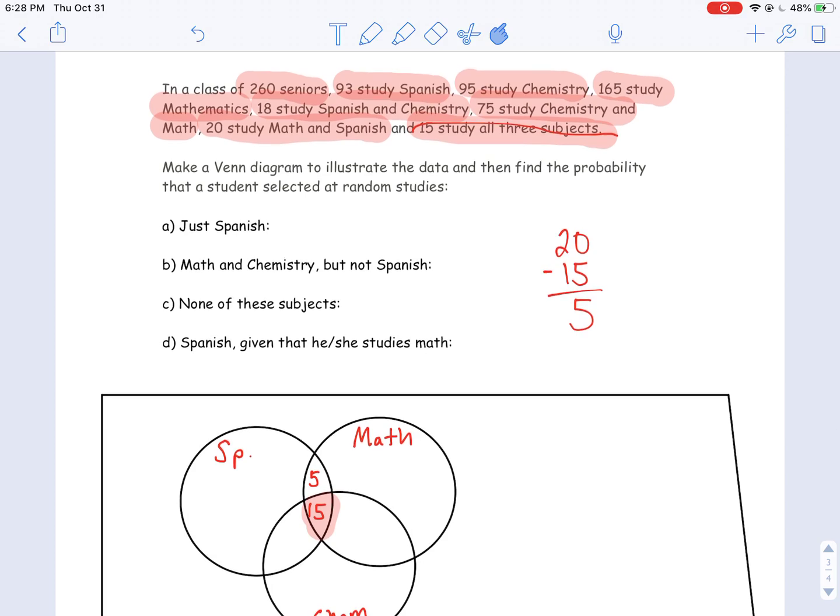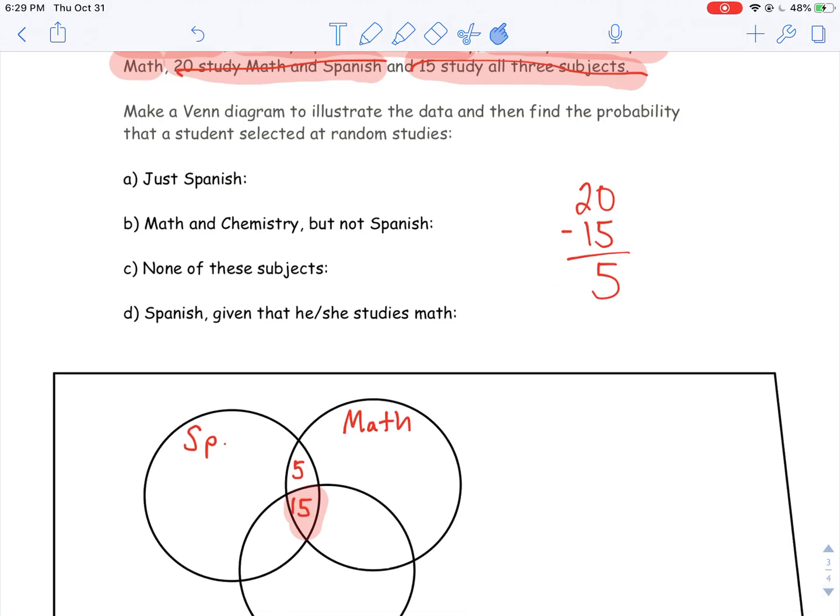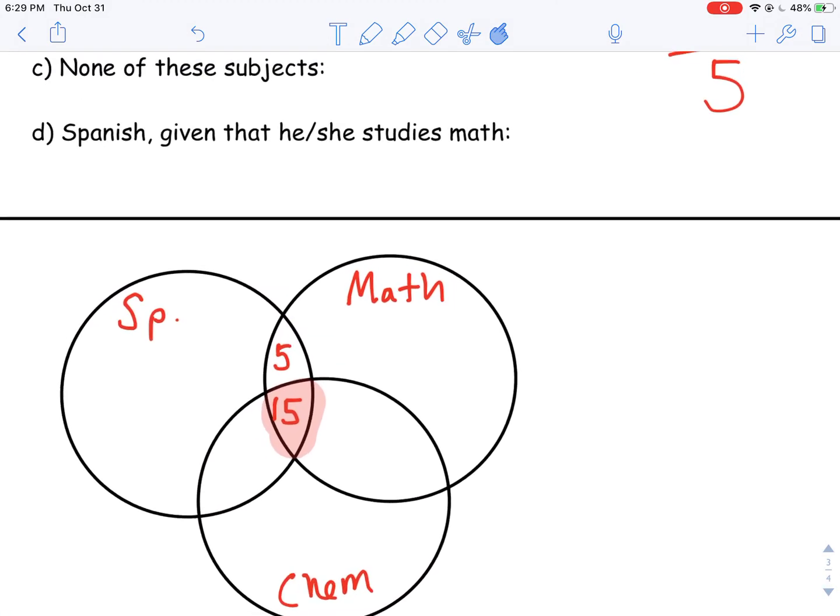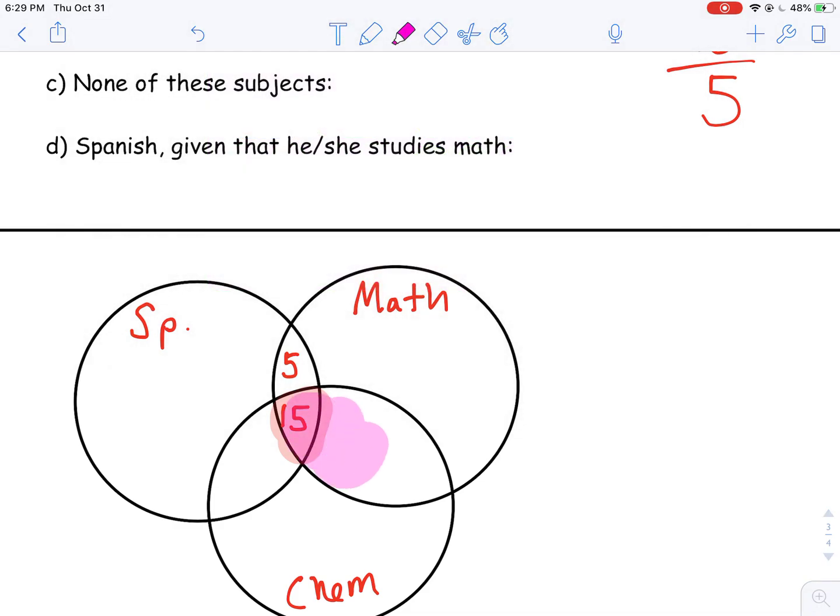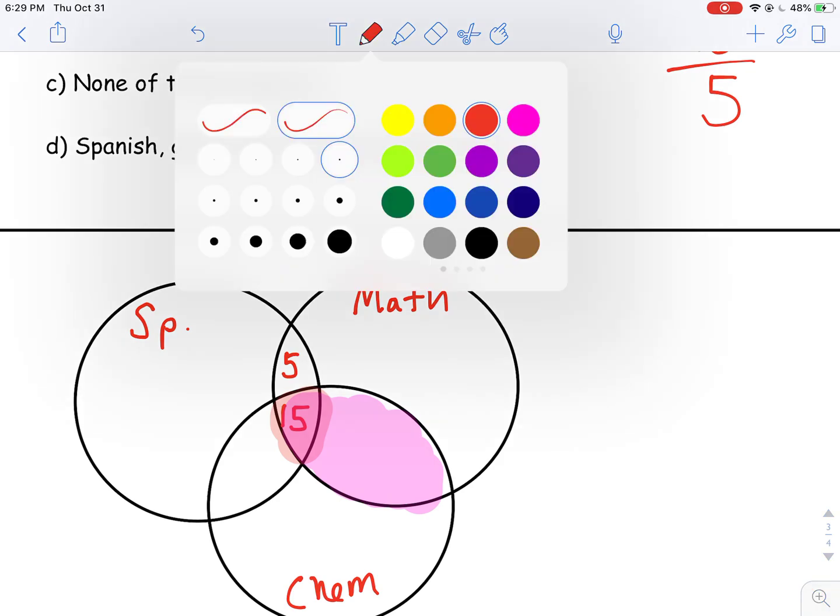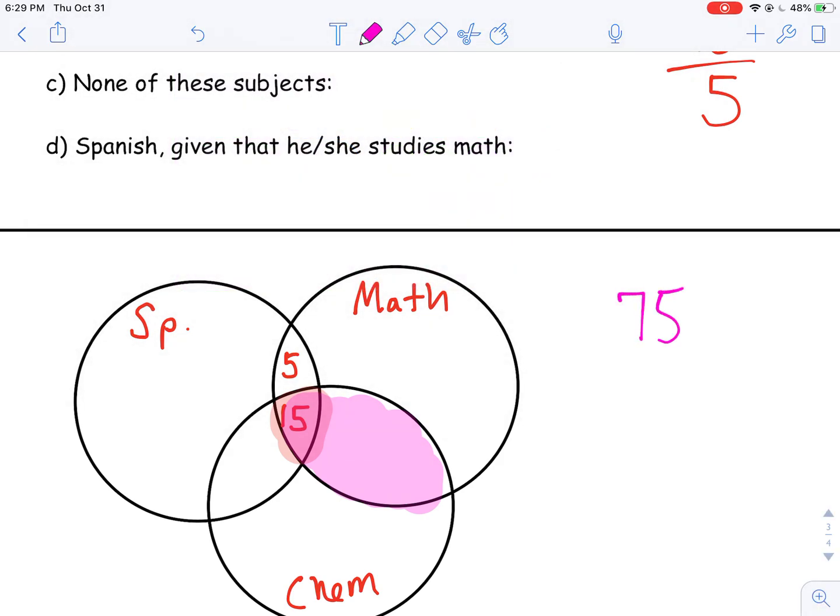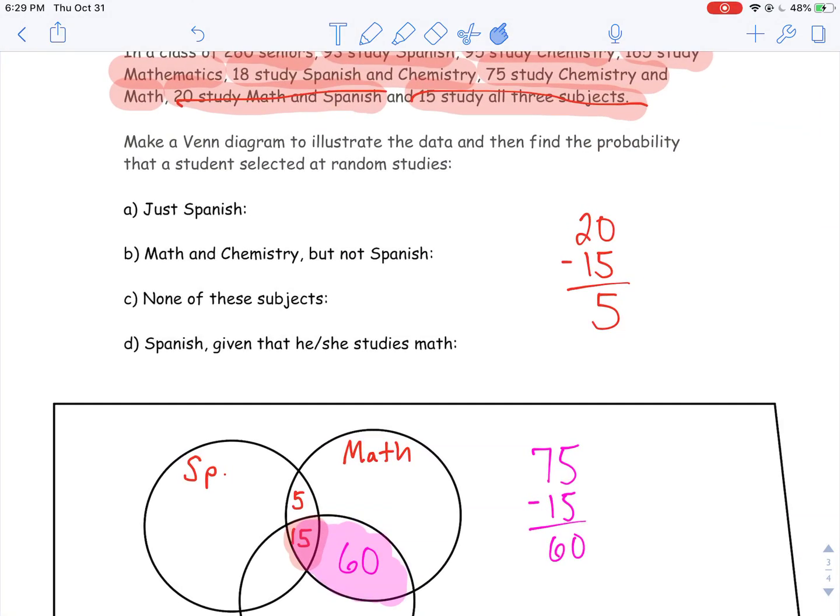75 study Chemistry and Math. So we're going to look for Chemistry and Math. The intersection of Chemistry and Math is going to be right here. But they tell me 75. That 75 includes these 15 who are taking all three of them. So I'm going to subtract that 15, and that gives me 60. I'm plugging 60 right here. I've got another one off the table here.